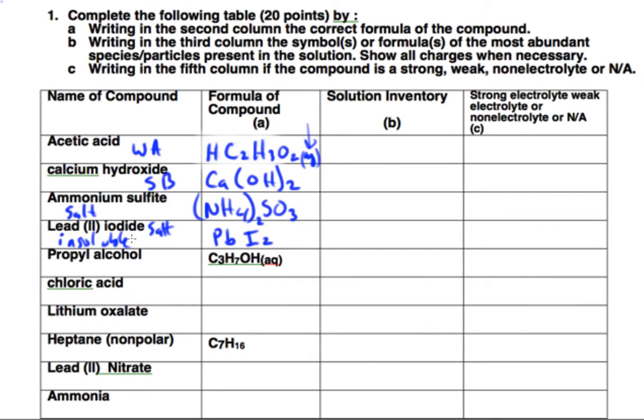Propyl alcohol, I gave you the formula for this, but what's important is it says aqueous. If it's aqueous, it's soluble in water, so we know it's polar, and therefore we know it's soluble.